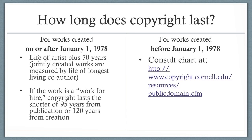How long does copyright last? The copyright term for works created on or after January 1, 1978, is subject to the 1976 Copyright Act. For works by a known individual author, the copyright runs from the date of creation and lasts the life of the author plus 70 years. If the work is a work for hire, copyright lasts the shorter of 95 years from publication or 120 years from creation. I will not be discussing works for hire in this presentation.